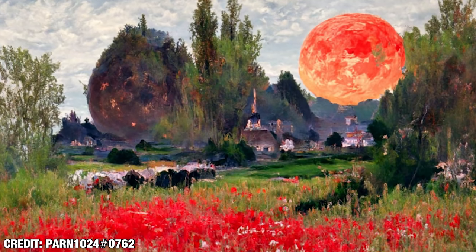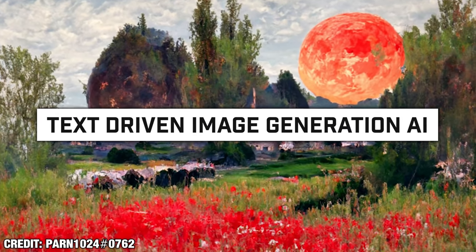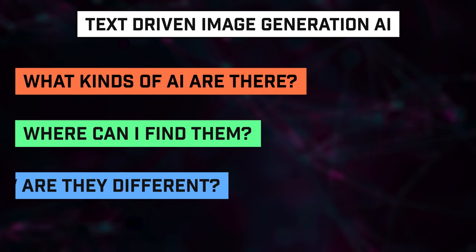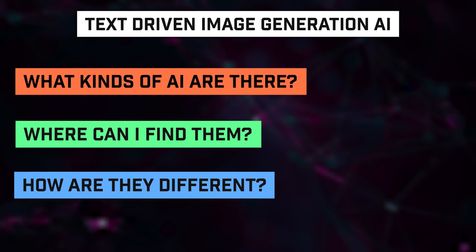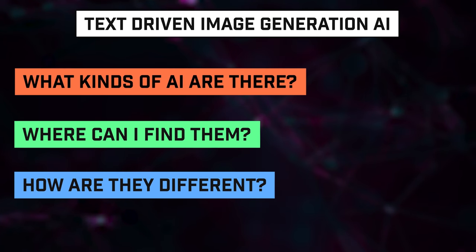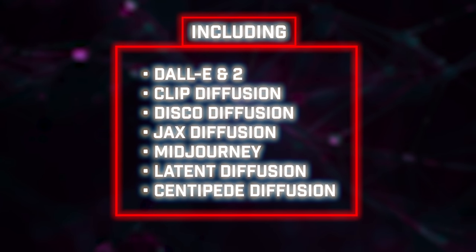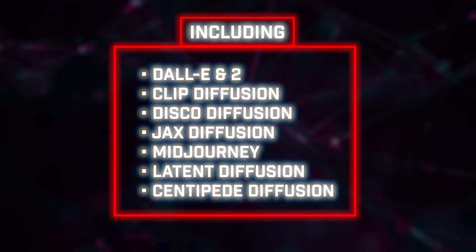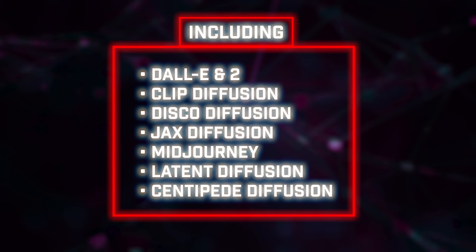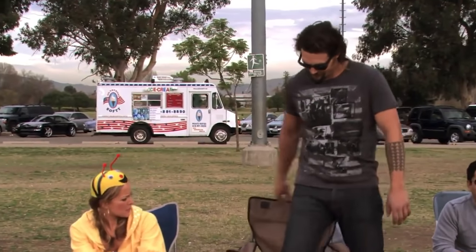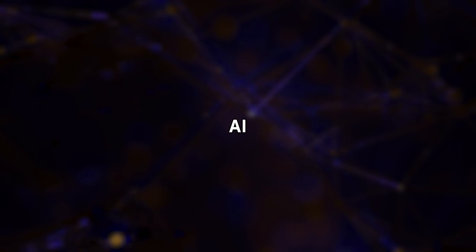This machine learning magic is often categorized as text-driven image generation AI. But what kinds of AI are there? Where can I find them? And how are they different? You will be able to find out the answers to these questions in this video. I will be covering all if not most of the modern text-to-image AIs and making this video almost like a viewing fest. So even if you don't understand what I'll be explaining later, it's totally alright. Just sit back, relax, and prepare yourself for an experience of the most beautiful page in the realm of AI research. Welcome to the world of AI-generated art.